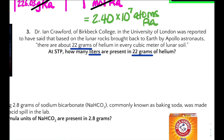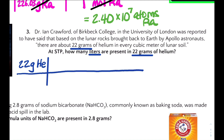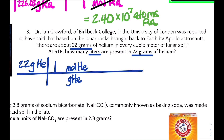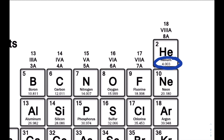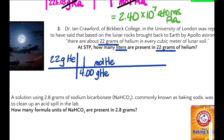Let's set up our dimensional analysis. Grams of helium will go at the bottom of our setup and moles of helium at the top. The molar mass of helium from the periodic table is 4.003 grams per mole, which we round to 4.00 grams per mole. Now that we've canceled out grams of helium, we convert from moles of helium to liters of helium — moles of helium go at the bottom, liters at the top. One mole of helium at STP equals 22.4 liters.